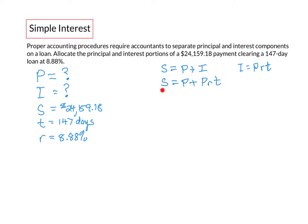So S equals P plus PRT. Now we have a value for S, a value for R, and a value for T and we can solve for P. Here we could factor out the P but we don't have to so we'll leave it for now.